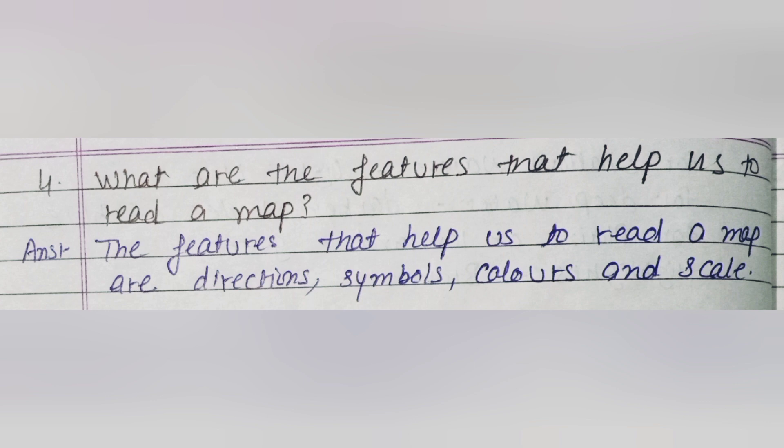Question number four: What are the features that help us to read a map? Answer: The features that help us to read a map are directions, symbols, colors, and scale. These are the features of any map that help us to read it.